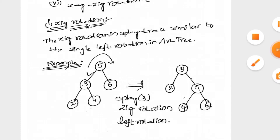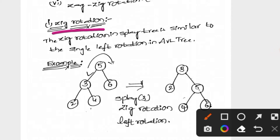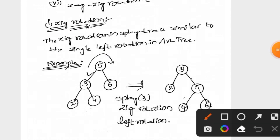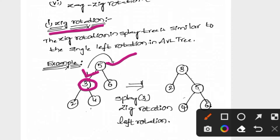The first rotation is the zig rotation. Zig rotation is a left rotation — it is the same as the AVL tree left rotation. We rotate a single element from the left direction to the right direction. For example, in this tree we rotate the root element. The zig rotation behaves the same as an AVL tree rotation in the right direction.